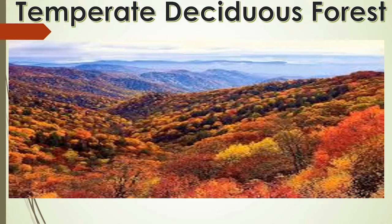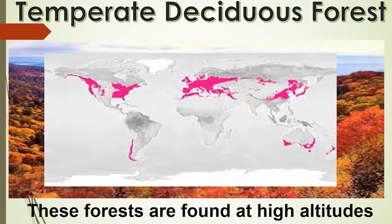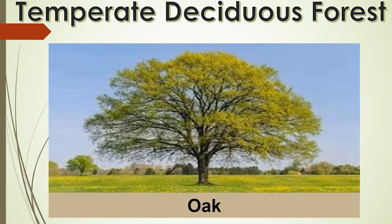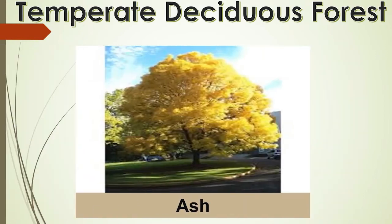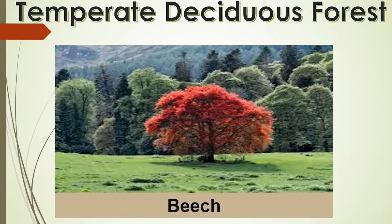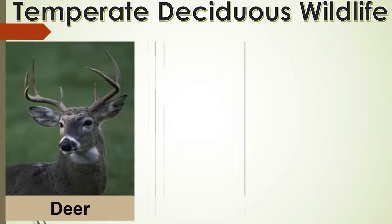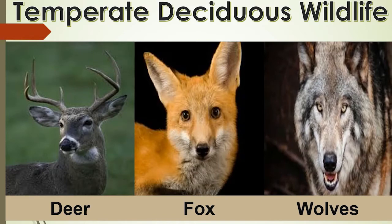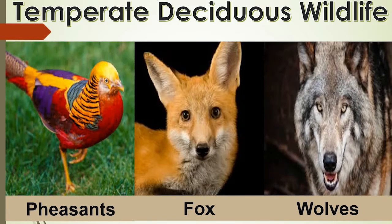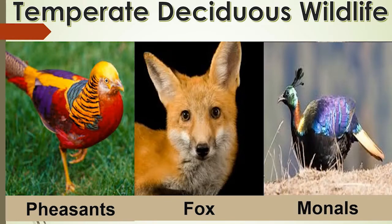Temperate deciduous forests are found in the northeastern part of USA, China, New Zealand and also in the coastal regions of western Europe. Trees of these forests shed their leaves in the dry season. The common trees are oak, ash, beech etc. Deer, foxes and wolves are the common animals found here. Birds like pheasants and moles are also found here.